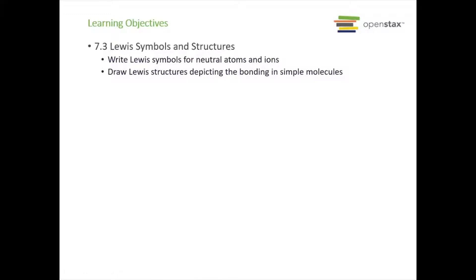Welcome back. We are now on 7.3 Lewis Symbols and Structures. This is really going to build upon what we talked about in 7.2. We're focusing in on covalent compounds. We're going to use Lewis symbols for neutral atoms and ions and draw Lewis structures depicting the bonding in simple molecules.